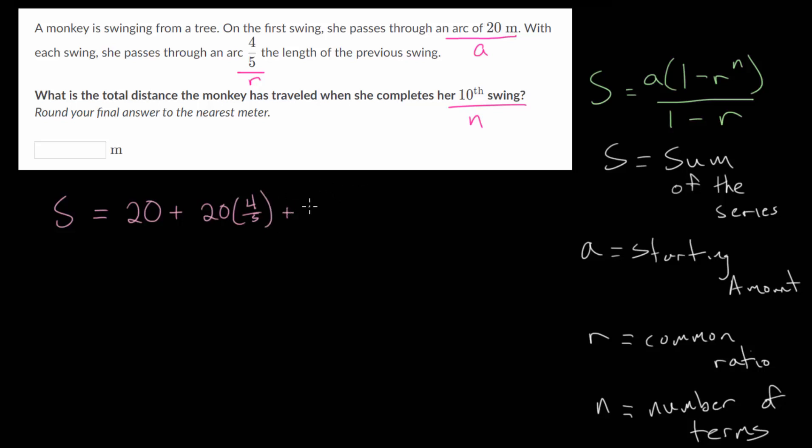The third swing will be 20 multiplied by 4 fifths twice. Or essentially, we're taking the previous term here and multiplying again by 4 fifths. So we're going to get 20 multiplied by 4 fifths squared, and so on.